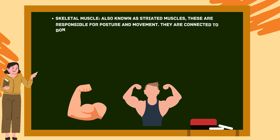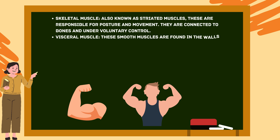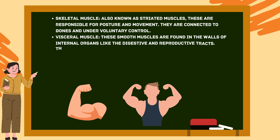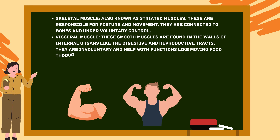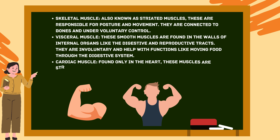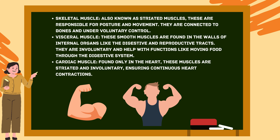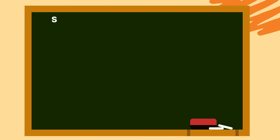Visceral muscles are smooth muscles found in the walls of internal organs like the digestive and reproductive tracts. They are involuntary and help with functions like moving food through the digestive system. Cardiac muscle is found only in the heart; these muscles are striated and involuntary, ensuring continuous heart contractions.